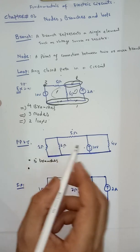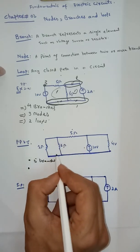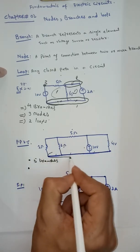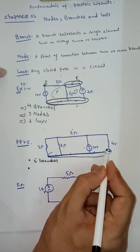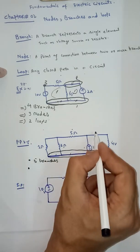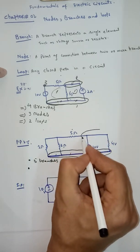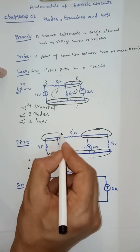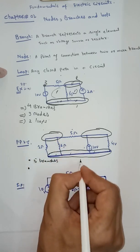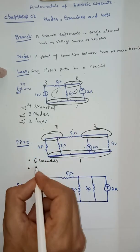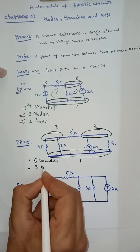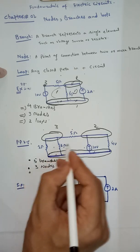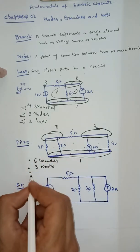For nodes in this circuit: we don't have any element here so this is a single node — one. We don't have any element here either, so this is a single node — two. And three. So we have three nodes. And similarly, one, two, three — three loops.